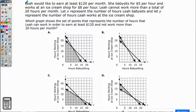This is an Algebra 1 sample question number 9, part A. It says, Leah would like to earn at least $120 per month. She babysits for $5 an hour and works at an ice cream shop for $8 an hour.